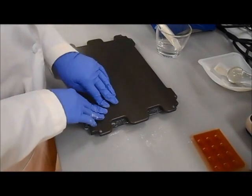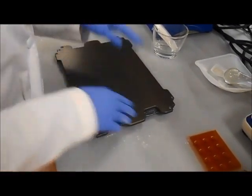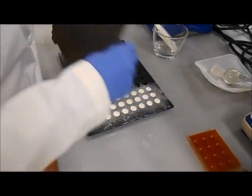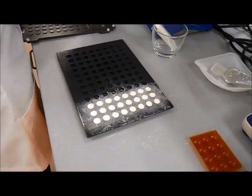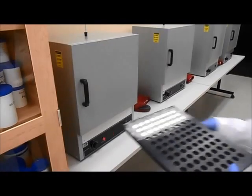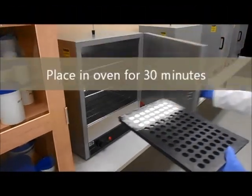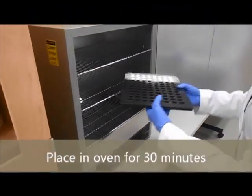Once you've added the last of the powder, use the top plate to pack the powder in one last time and then move it to the convection oven. Be sure to record the time when you place it in the oven.